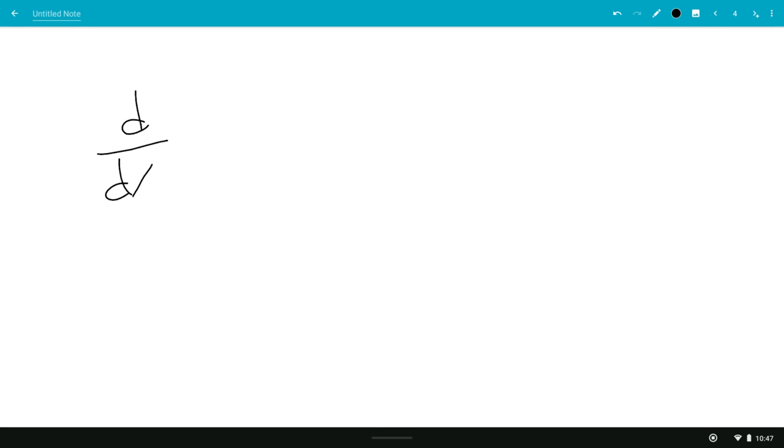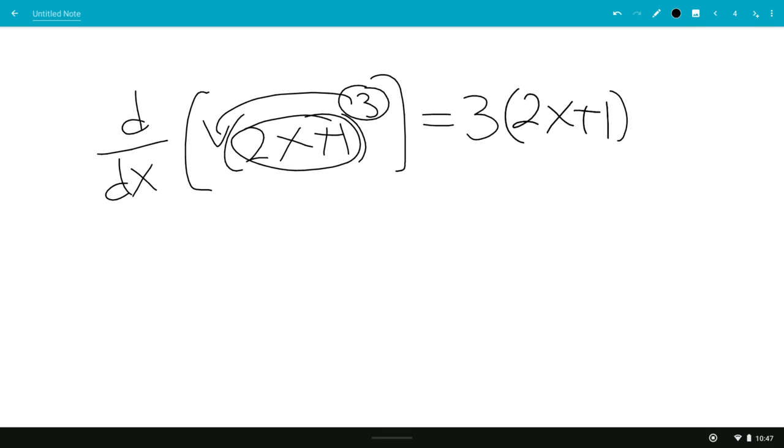If you want the derivative of 2x plus 1 cubed, think of this as your u. Bring this down, so it will be 3 times u, 3 minus 1 is 2, times the derivative of the inside, which is 2. The derivative of 2x plus 1 is 2, so the final answer would be 6 times 2x plus 1 quantity squared.